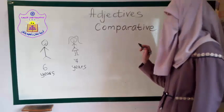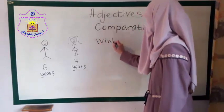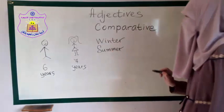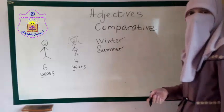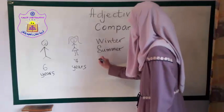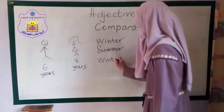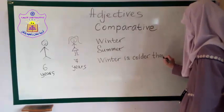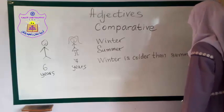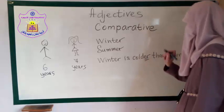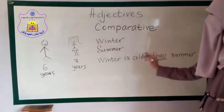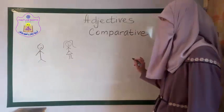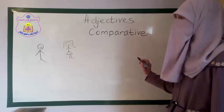Let's make another example. We have winter and we have summer and we want to compare between them. Winter is colder than summer. We added the -er ending and 'than' to form that comparison. This rule applies to short adjectives.